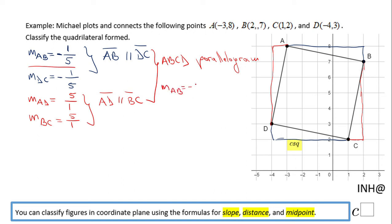If you take a look, the slope of AB is negative 1 fifth, and the slope of, let's see, the next side, consecutive sides BC for example, is 5 over 1.